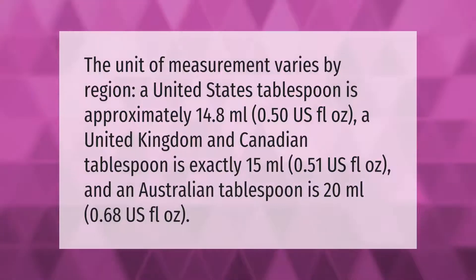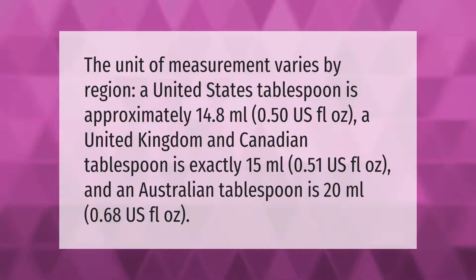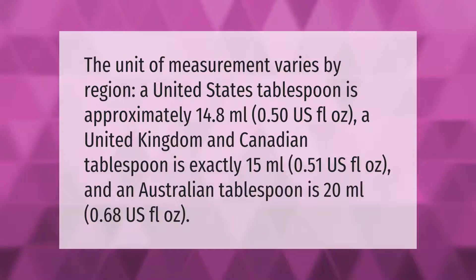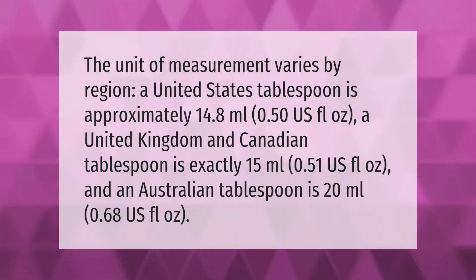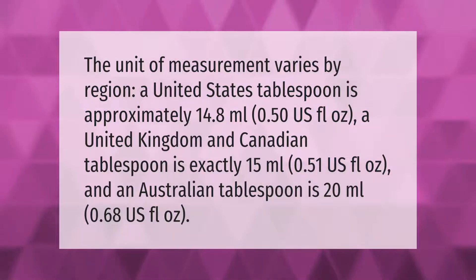The unit of measurement varies by region. A United States tablespoon is approximately 14.8 milliliters, or 0.50 US fluid ounces. A United Kingdom and Canadian tablespoon is exactly 15 milliliters, or 0.51 US fluid ounces. And an Australian tablespoon is 20 milliliters, or 0.68 US fluid ounces.